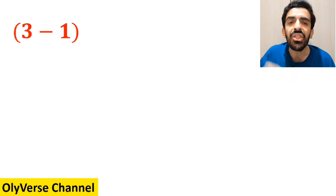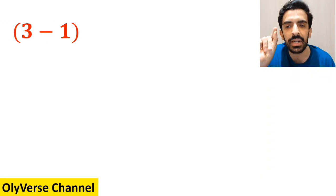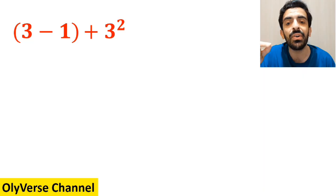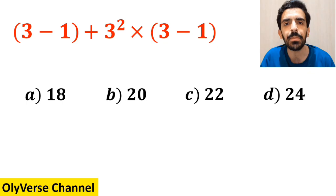What is the value of the expression 3 minus 1 inside the parenthesis, then plus 3 to the power of 2, and multiply by again 3 minus 1 inside the parenthesis? Which option do you think is the correct answer to this question?